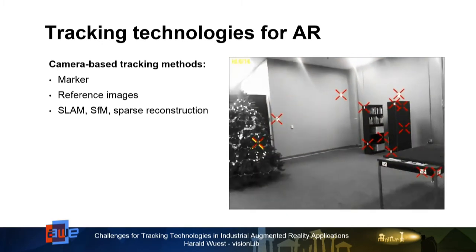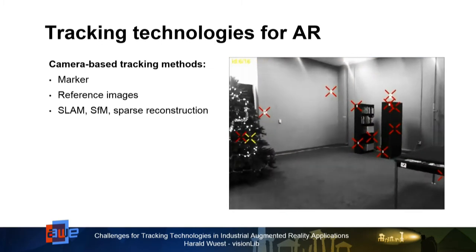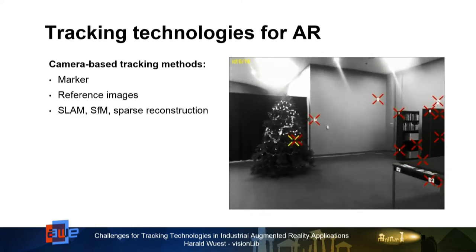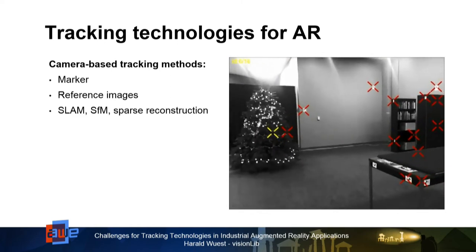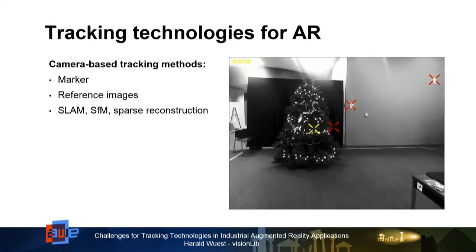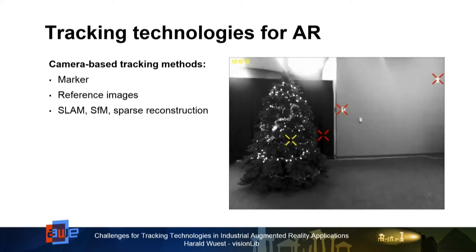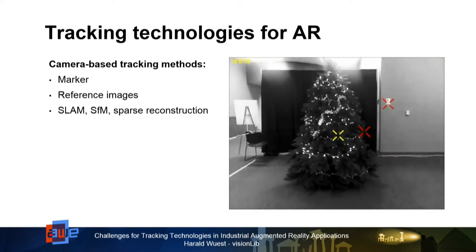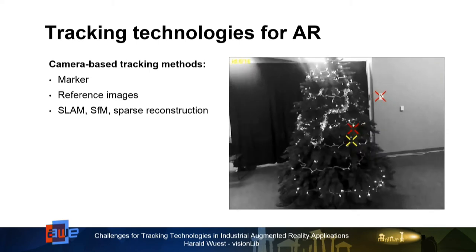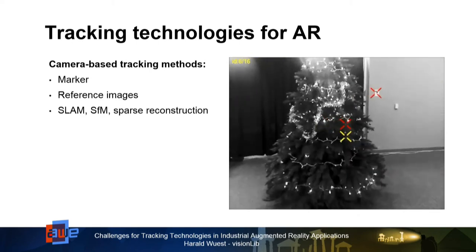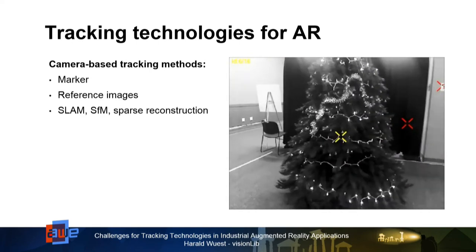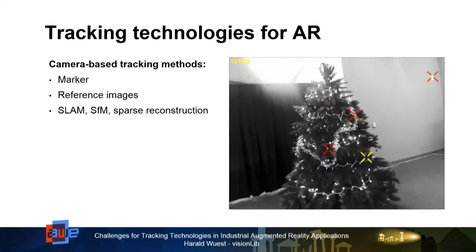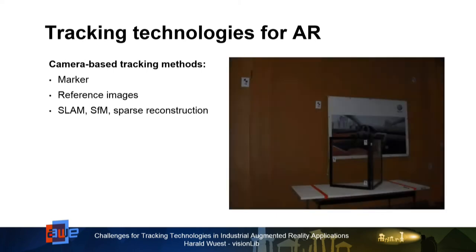These were the early stages of SLAM-based tracking. They also made challenges with blinking Christmas trees, which makes things quite hard because feature-based methods are always very light-dependent. If there's a lot of lighting change, the tracking robustness becomes quite unstable.